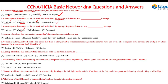Question four: a group of systems that can receive one another's broadcast messages is known as a broadcast domain. We discussed collision and broadcast domains. In a collision domain, two or more devices send data that collides, requiring retransmission. In a broadcast domain, a single message is sent to all devices in the network.